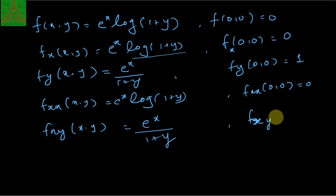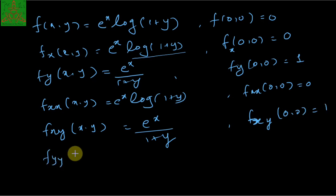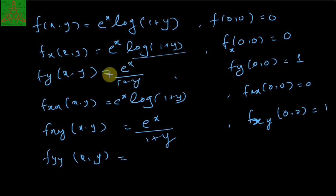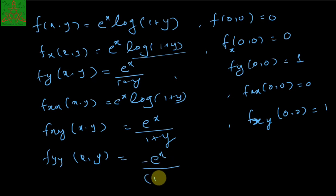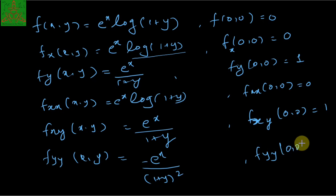f_xy at (0,0) = 1. f_yy at (x,y) is the derivative of e^x/(1+y) with respect to y, which gives e^x · (−1/(1+y)²). Therefore f_yy at (0,0) = −1.